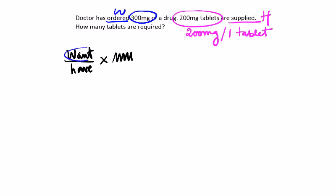So what we want in this case is 300 milligrams. What we have available is 200 milligrams per one tablet. We have two quantities, so we have to choose one.